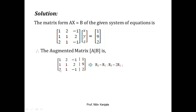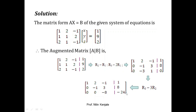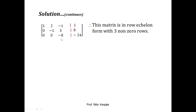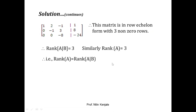These transformations reduce elements a21 and a31 to zero. Next, we perform R3 minus 3 times R2, which makes element a32 equal to zero. This matrix cannot be further reduced, so this is the row echelon form of the augmented matrix. We observe the number of non-zero rows: in matrix A there are three non-zero rows, so rank of A is 3, and in matrix [A|B] there are also three non-zero rows, so rank of [A|B] is also 3.